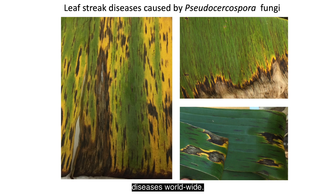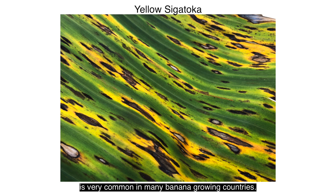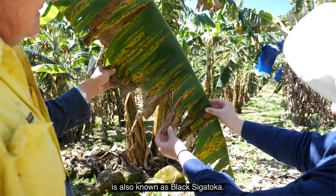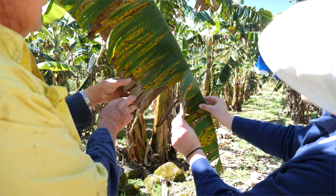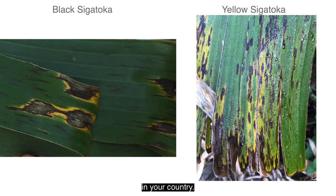The most common banana leaf diseases worldwide are those caused by the Pseudocercospora fungi. The disease yellow Sigatoka is very common in many banana growing countries. Black leaf streak is also known as black Sigatoka. These diseases reduce the photosynthetic area of leaves, reducing yield, and there can be mixed ripening of bunches. Black leaf streak is not present in every country, so be aware of what diseases are common in your country.